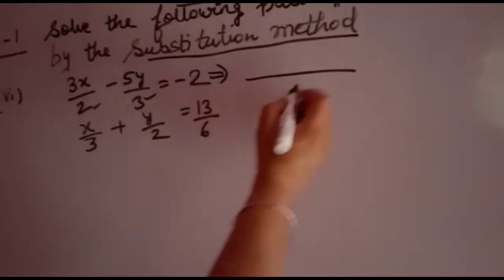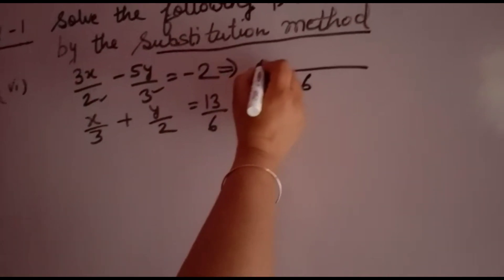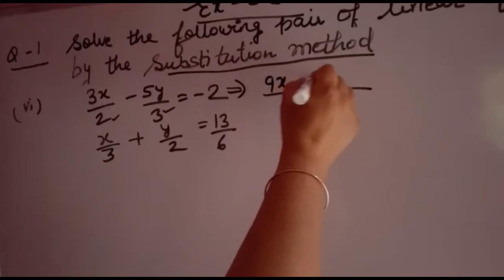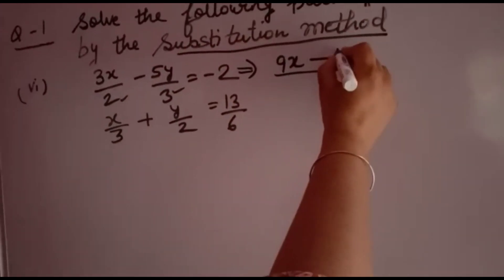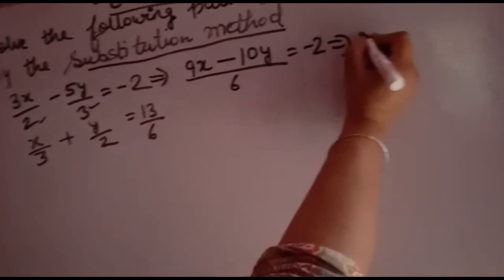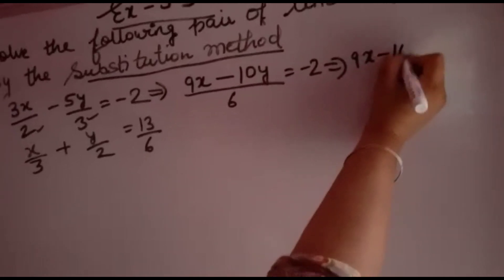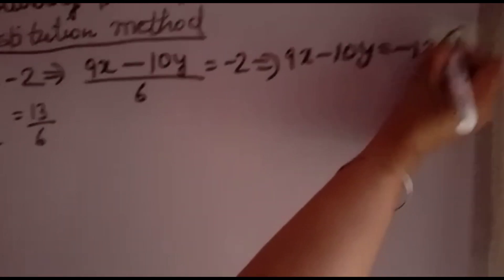You will take LCM of 2 and 3, it will come 6. 6 divided by 2 is 3, 3 into 3x is 9x. Minus 6 divided by 3 is 2, 2 into 5y is 10y equal to minus 2. So 9x minus 10y will come 6 into minus 2, that is minus 12. This is first equation.